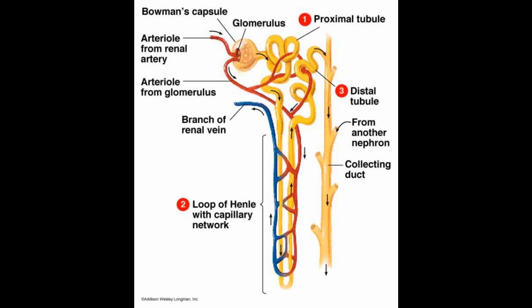The Malpighian body extends into the renal tubule or urinary tubule. The urinary tubules of nephrons in each kidney join to form the ureter. The renal tubule has three main parts: first, the proximal convoluted tubule (PCT); second, the distal convoluted tubule (DCT); and the U-shaped loop of Henle.